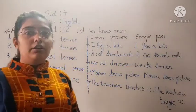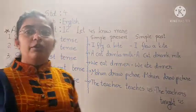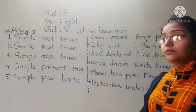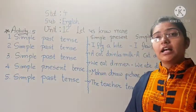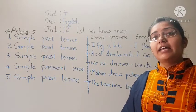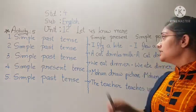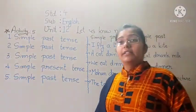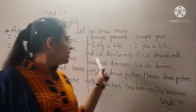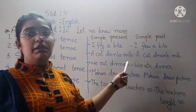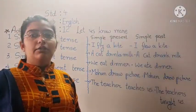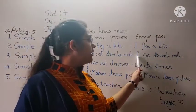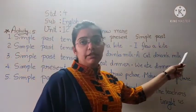First sentence: 'I flew a kite.' Fly ka past form hoga — flew. So the answer is: I flew a kite. Number 2: 'A kate drinks milk.' Drink ka hoga — drink. So the answer is: A kate drinks milk.